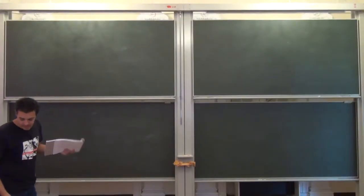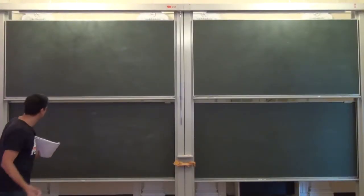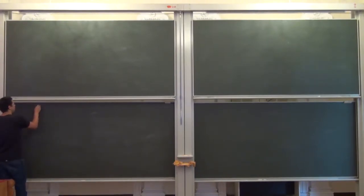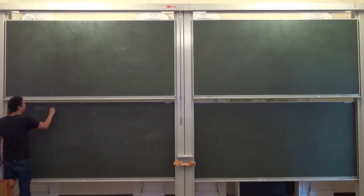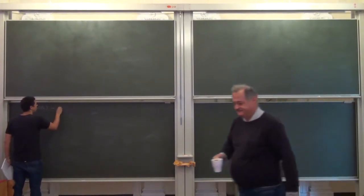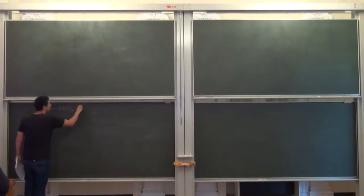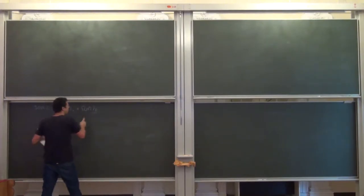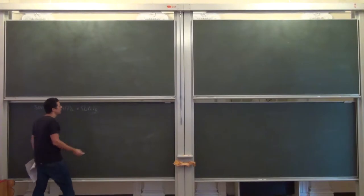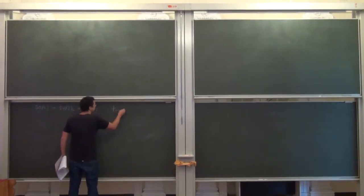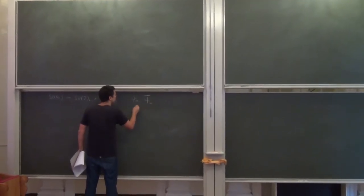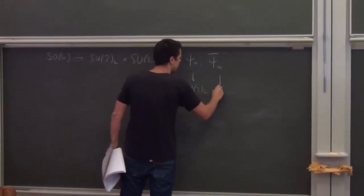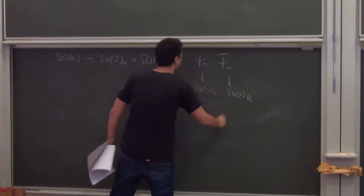Last time we were trying to understand how we actually realize the double cover of the rotation group in four dimensions in terms of SU(2)_left and SU(2)_right. When you think about the Lorentz group in this way, the basic objects are spinors — this is acted on by SU(2)_left, and this is acted on by SU(2)_right.